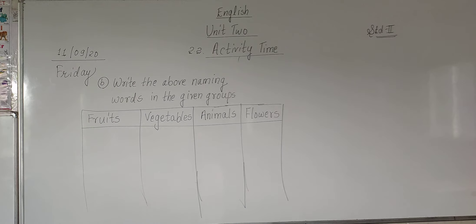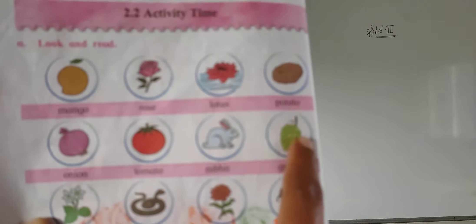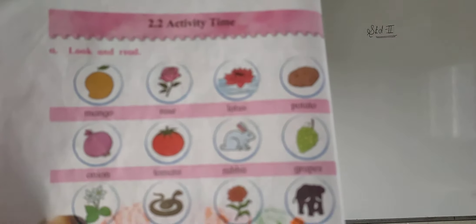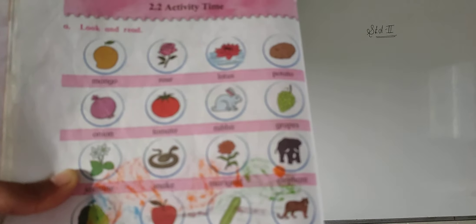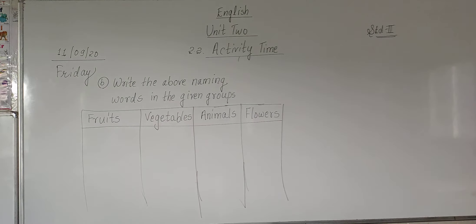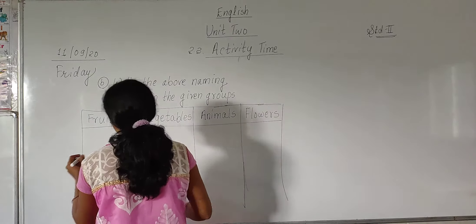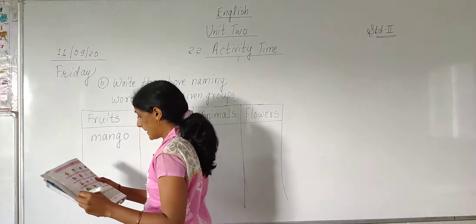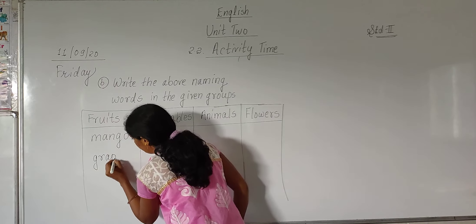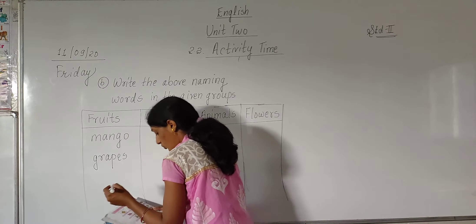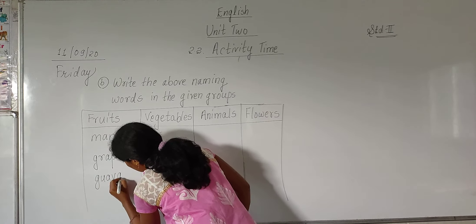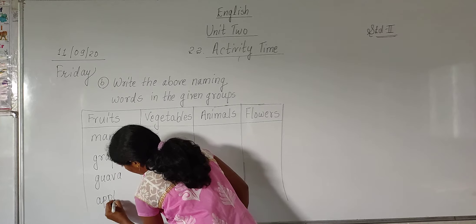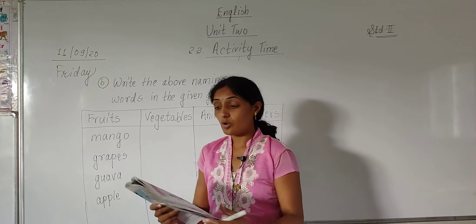First, in fruits: mango is a fruit, grapes yes, guava yes — it is a fruit — and apple is also a fruit. So we are going to write down four names in fruits: first one mango, next one grapes, then guava, and apple.